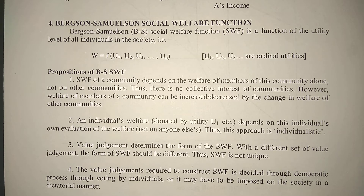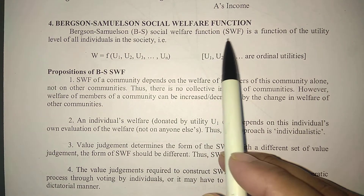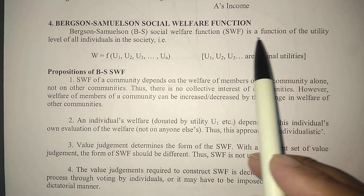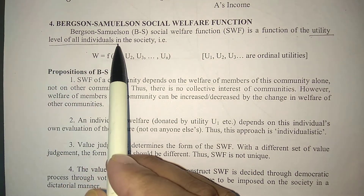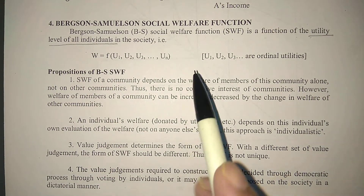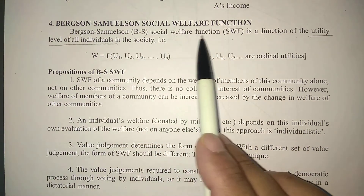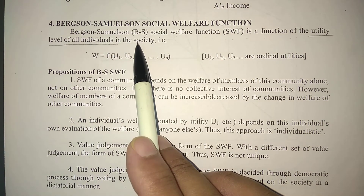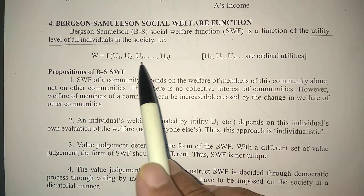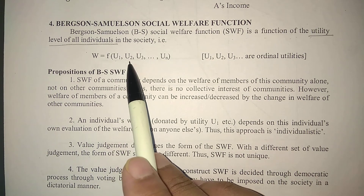Samuelson in 1947 stressed the flexibility of the social welfare function. The Bergson-Samuelson, or BS, social welfare function (SWF) is a function of the utility level of all individuals in the society.